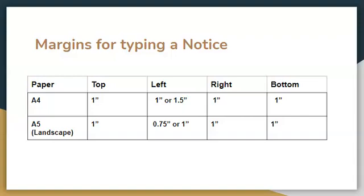Now, what are the margins necessary for this type of document? We can use either A4 or A5 paper based on the length of the notice. If it's a short notice, we use A5 paper in the landscape orientation, with margins of one inch for the top and bottom. For the left we can use either 0.75 inches or one inch, and one inch for the right.